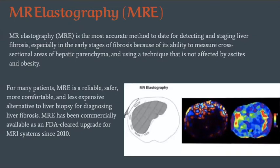Elastography is the most accurate method to date for detecting and staging liver fibrosis. Not affected by ascites and obesity. For many patients, it is safer, reliable, and more comfortable than liver biopsy.